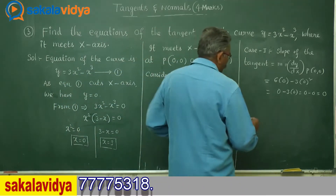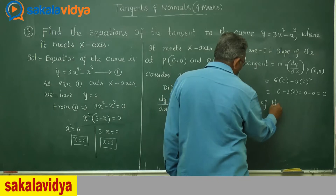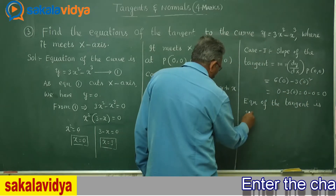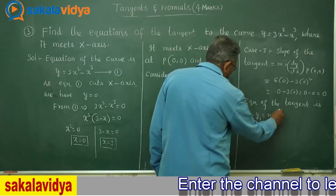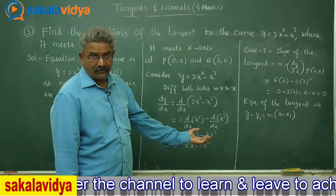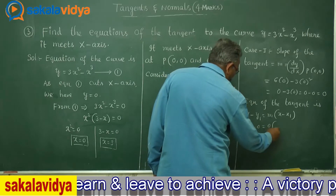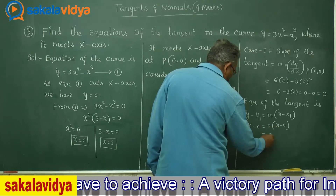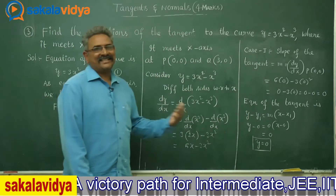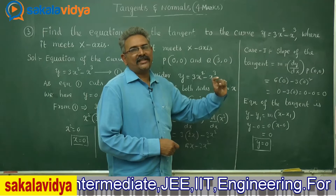The equation of the tangent is y minus y₁ equals m times (x minus x₁). Substituting x₁ equals 0, y₁ equals 0, and m equals 0: y minus 0 equals 0 times (x minus 0), so y equals 0. This means one equation of the tangent is the x-axis itself.